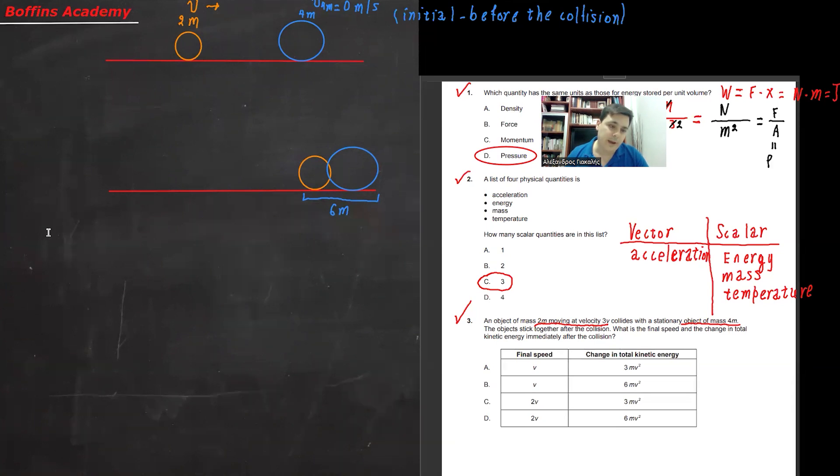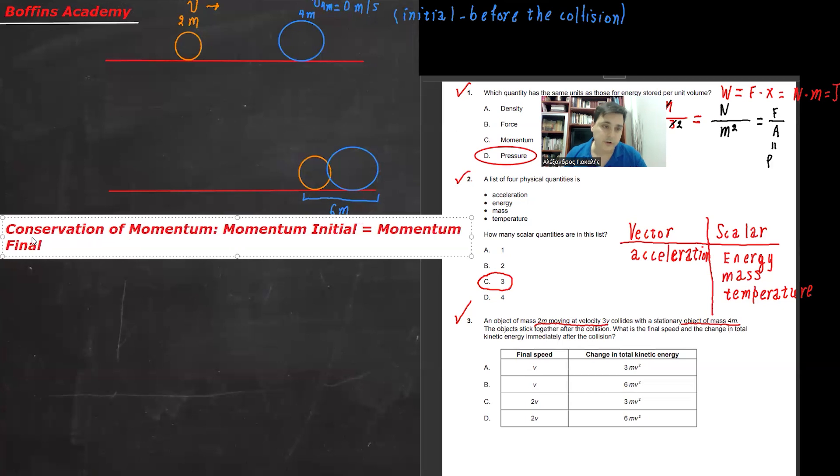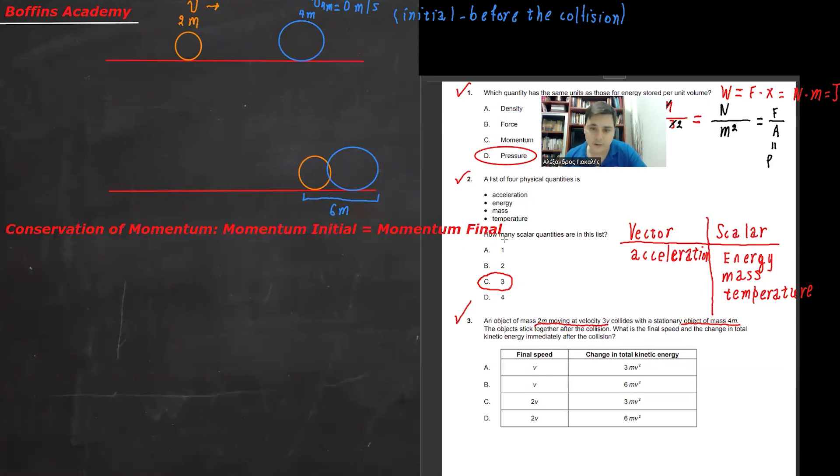Therefore, the conservation of momentum theorem indicates that conservation of momentum, momentum initial is equal to momentum final. What are we going to do? Here, practically, we're going to apply exactly that. We're going to write formulas. I need to remind you here that momentum is described, is denoted with the letter P. P is equal to m times V in general.